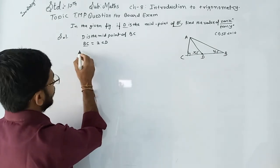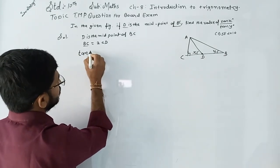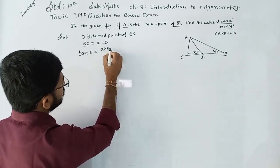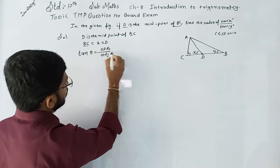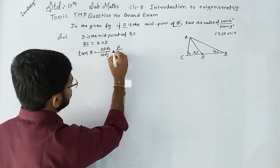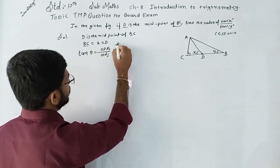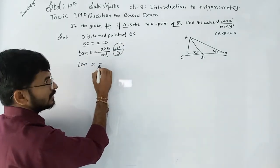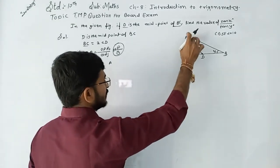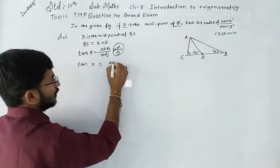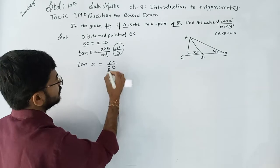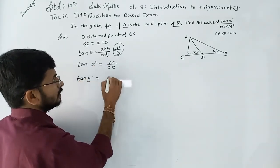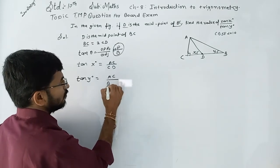Using the basic formula, tan theta is equal to opposite upon adjacent. We can apply this formula for tan(x): tan(x) is equal to the opposite side AC upon CD. For tan(y), it is AC upon BC.